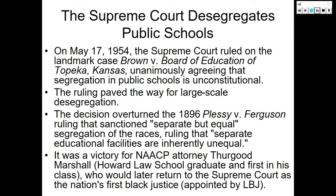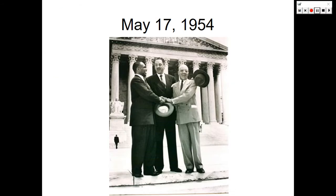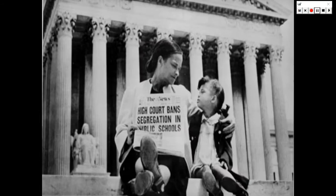Another attorney involved was Spotswood Robinson. Interestingly, Thurgood Marshall would later return to the Supreme Court as the nation's first African American justice, appointed by Lyndon B. Johnson in 1968. Here we have Thurgood Marshall in the center with the other members of the NAACP defense team on May 17, 1954, outside the Supreme Court. This is also a woman and her child holding up the newspaper headline 'High Court Bans Segregation in Public Schools' on the steps of the Supreme Court.